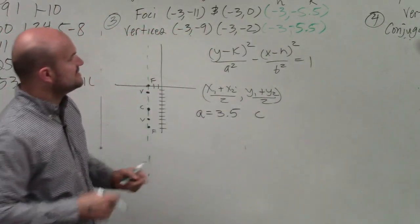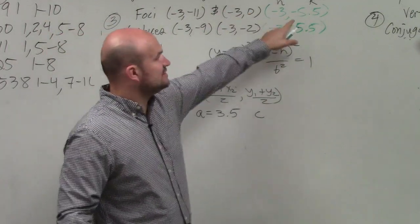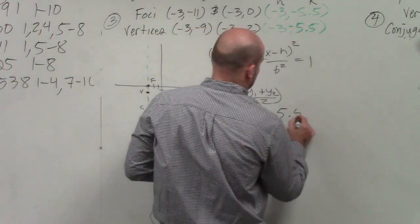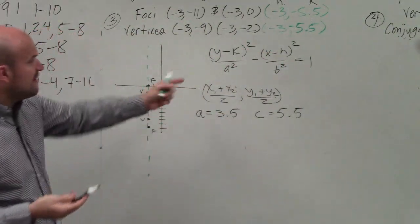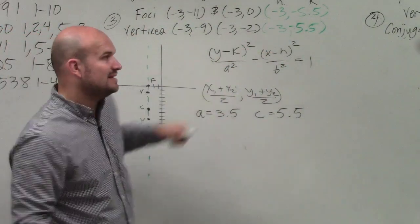I don't know what b is, but I do know what c is. And c is the distance from your foci to your center, which would be 5.5. Remember the equation is a little bit different, so I found a and c. However, to write this equation, I need to know a and b.